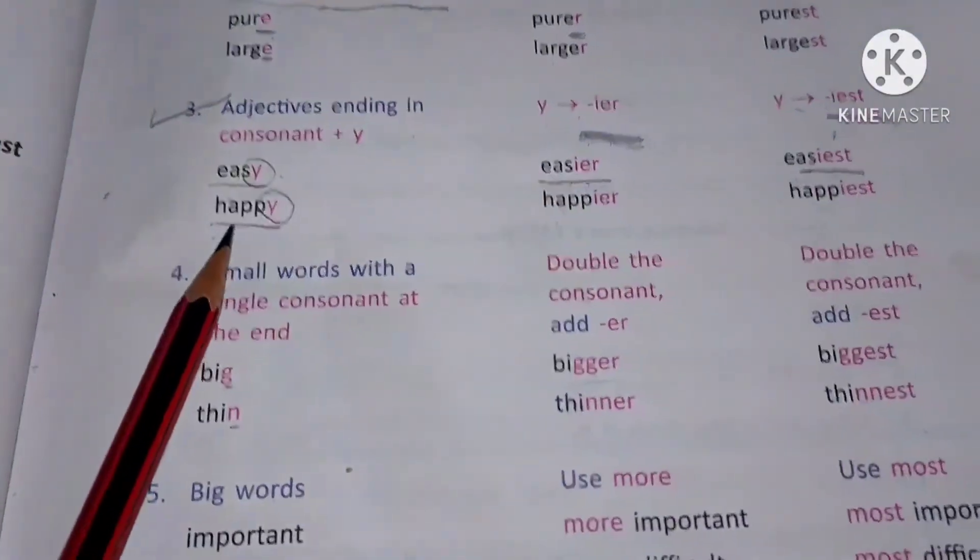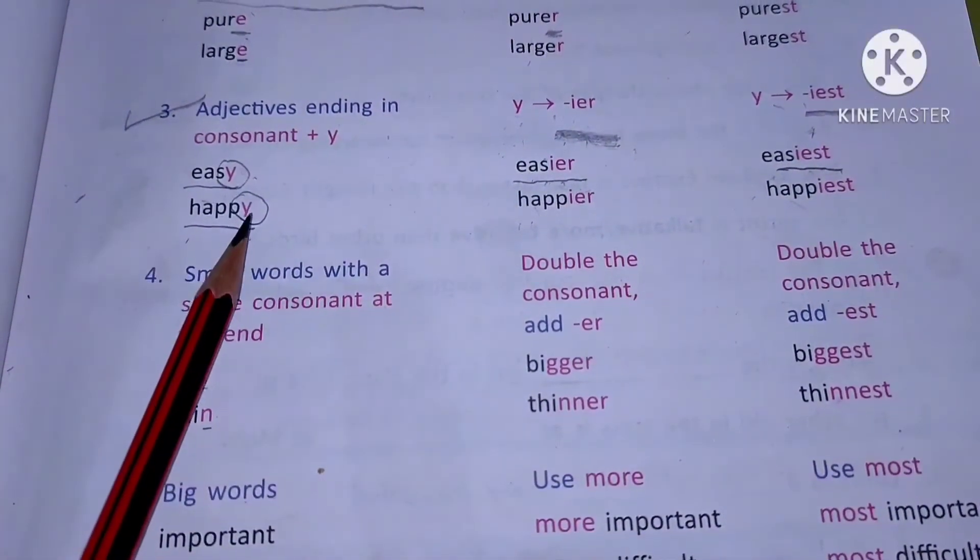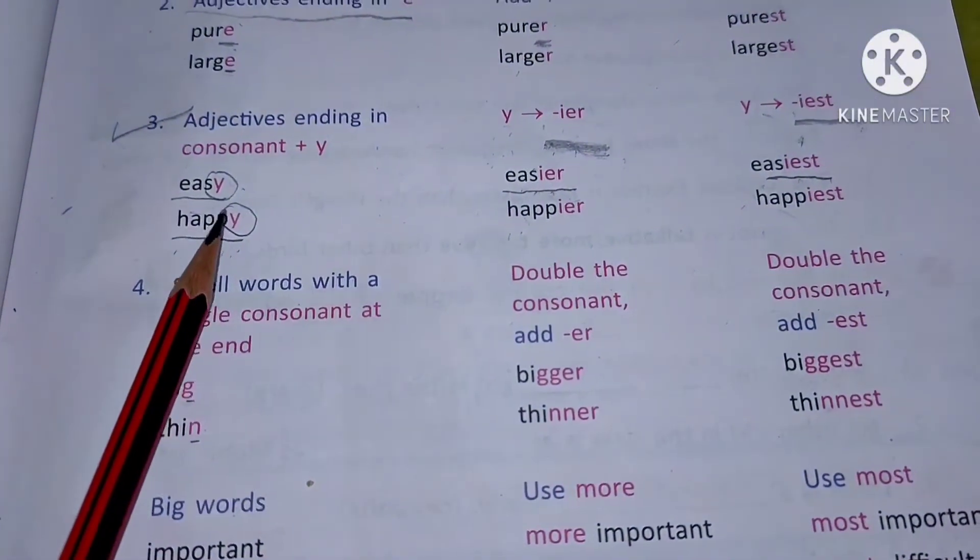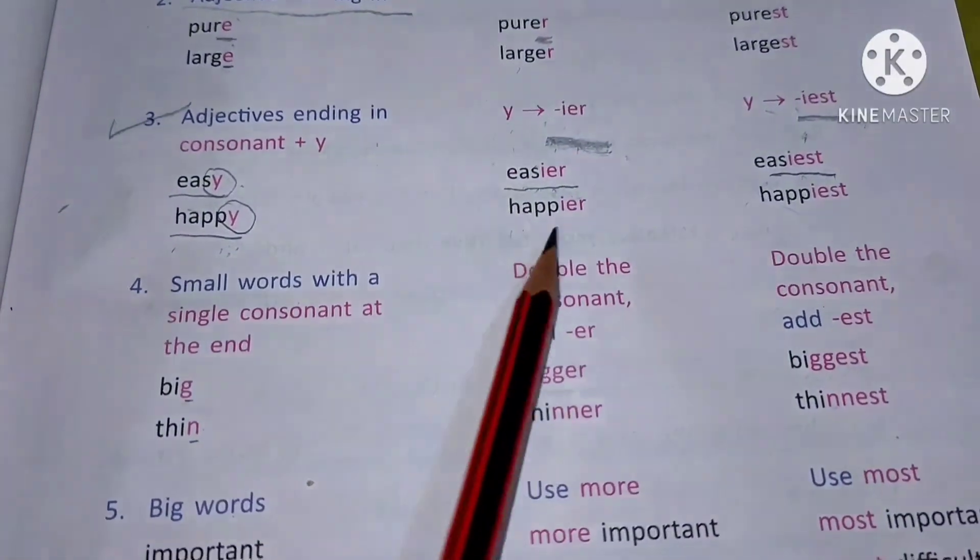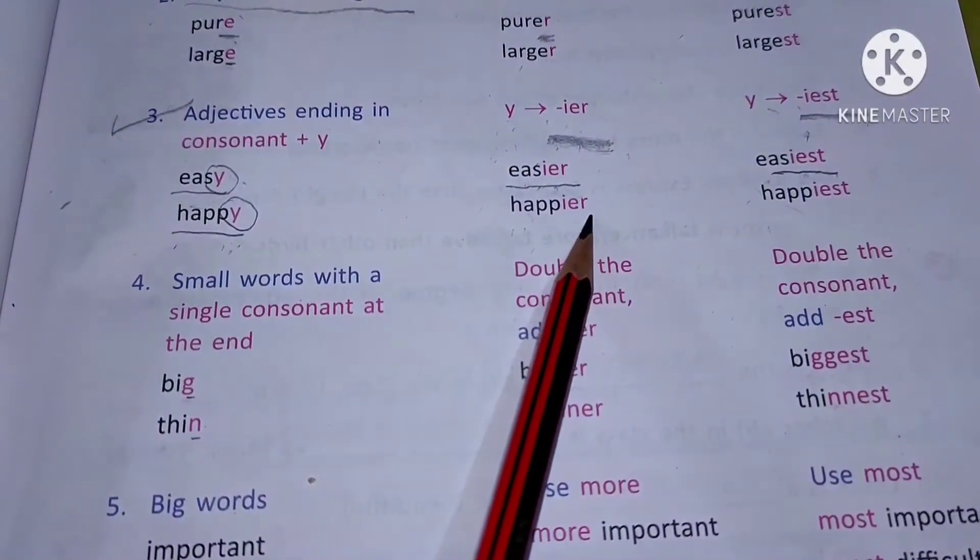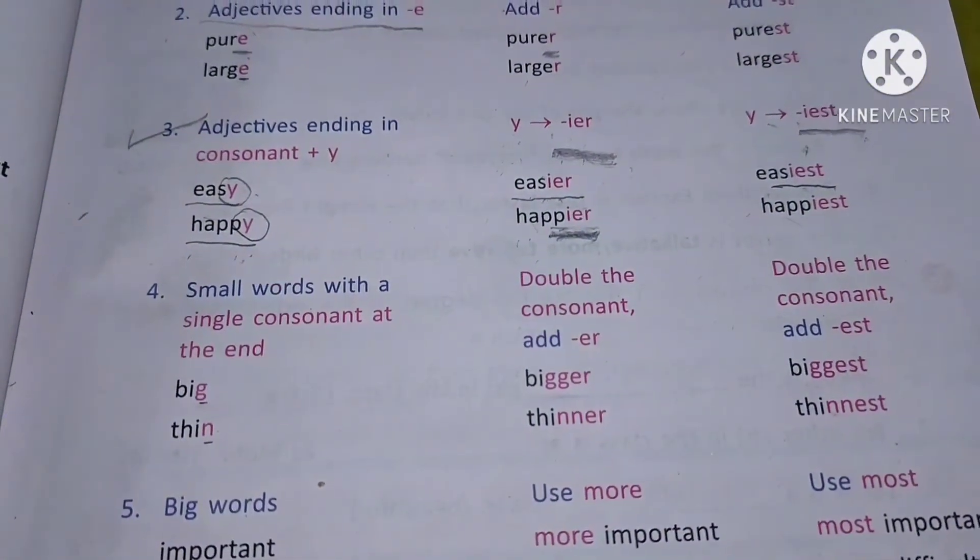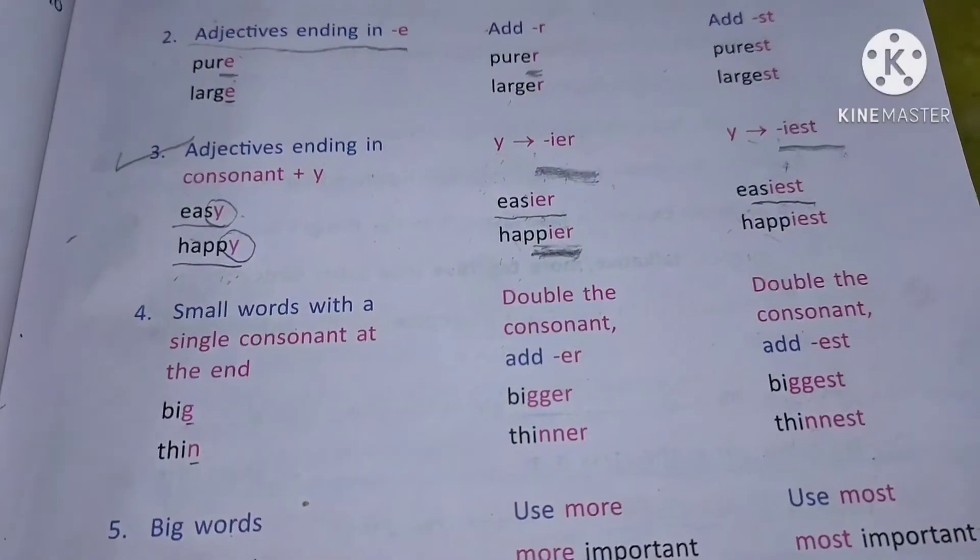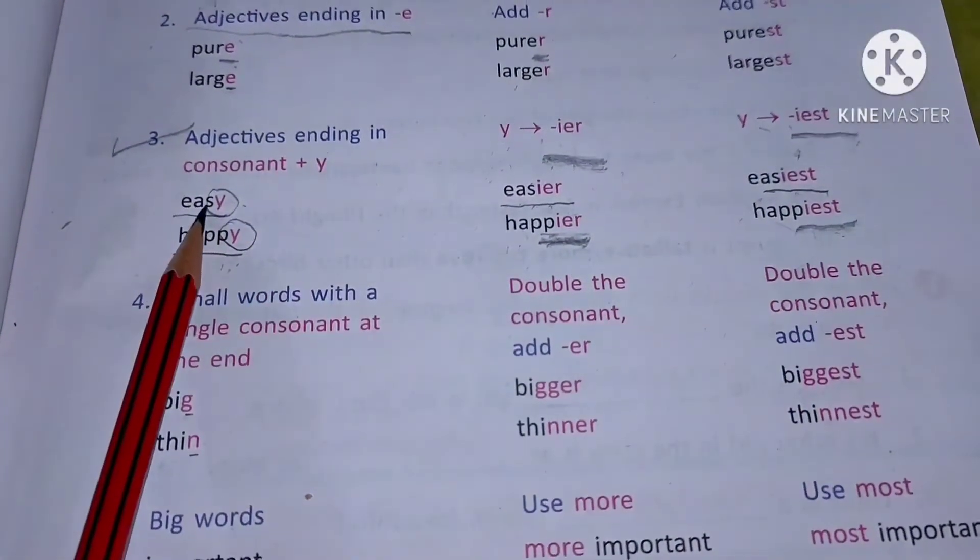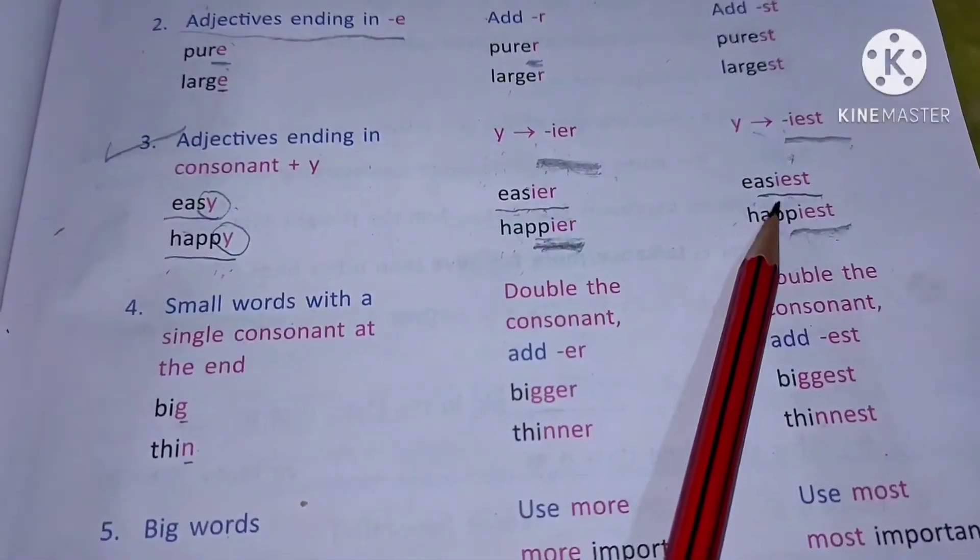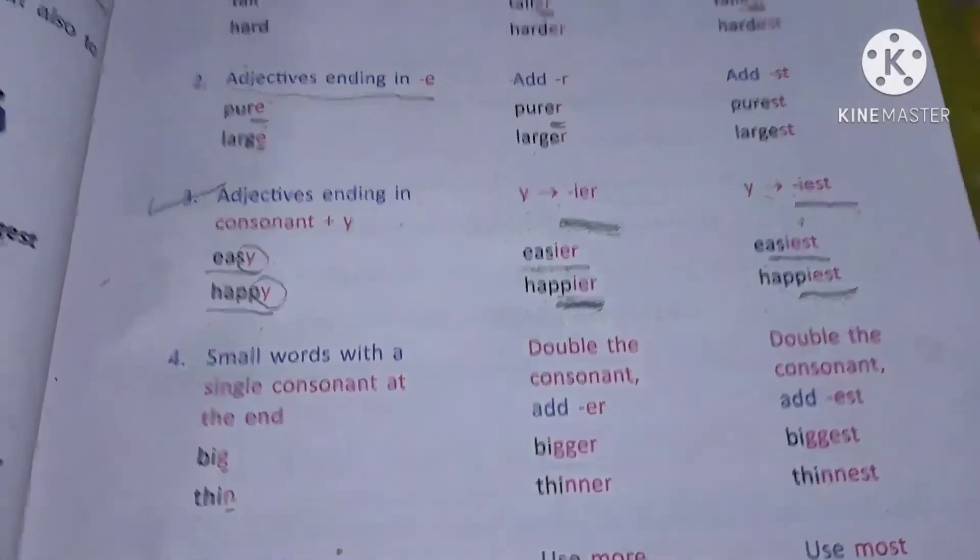Same way in happy also, it is ending in y, h-a-double-p-y. For comparative, the y will be removed and instead of y, i-e-r will be there, and in superlative degree it will be i-e-s-t. Easy, easier, easiest. Happy, happier, happiest.